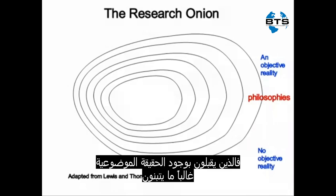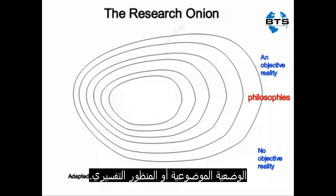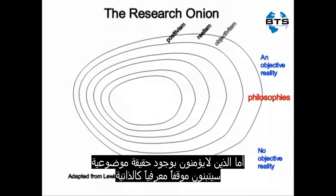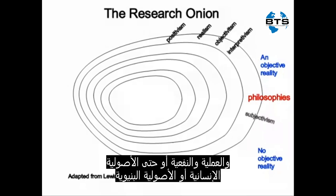Those accepting there is an objective reality more likely will adopt a positivist, objective, or interpretative perspective. Those arguing there is no objective reality will adopt more of an epistemological position that is subjectivist, pragmatic, functionalist, or either a radical humanist or radical structuralist.